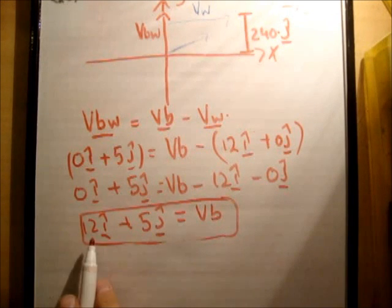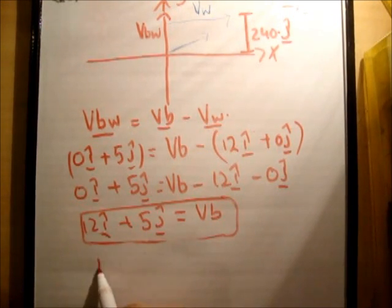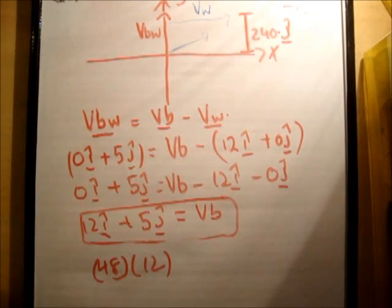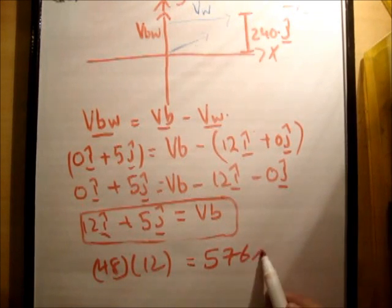So downstream is just in the i-hat unit vector direction. So 48 seconds times 12 gives us 576 meters.